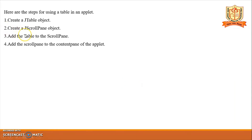Here are the steps for using the table in an applet. There are four steps you should remember: first, create a JTable object; second, create a scroll pane object; third, add the table to the scroll pane; and fourth, add the scroll pane to the content pane of the applet.